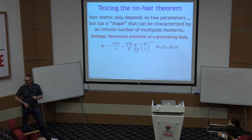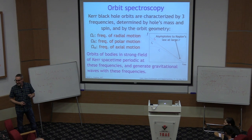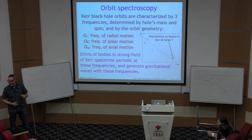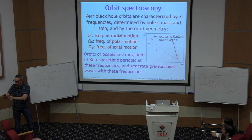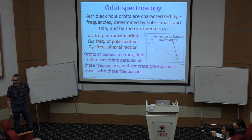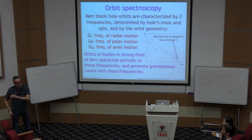These three frequencies provide a venue for precise tests of the spacetime's nature. Our host noted that omega_r and omega_theta were first calculated in the Kerr metric by Aliev and Gal'tsov — credit that has not always been well-acknowledged in the literature. I want to make sure that work gets cited going forward.